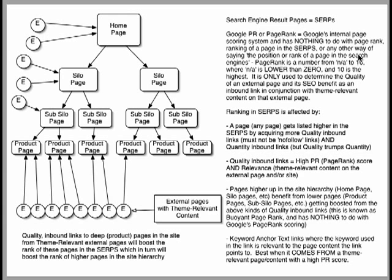PageRank is a number from basically zero to ten. But before Google discovers the page at all, it might be ranked NA — not available — and then it goes from there to zero. Ten is the most and NA is lower than zero, which is the least. It is only used to determine the quality of an external page and its SEO benefit as an inbound link, in conjunction with theme-relevant content on that external page.